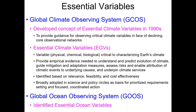They defined an essential climate variable as some observation that is critical to characterizing the Earth's climate. This provides the observational evidence needed to understand and predict the evolution of the climate, guide mitigation and adaptation measures, assess the risks, enable attribution of climatic events to underlying causes, and underpin climate services.